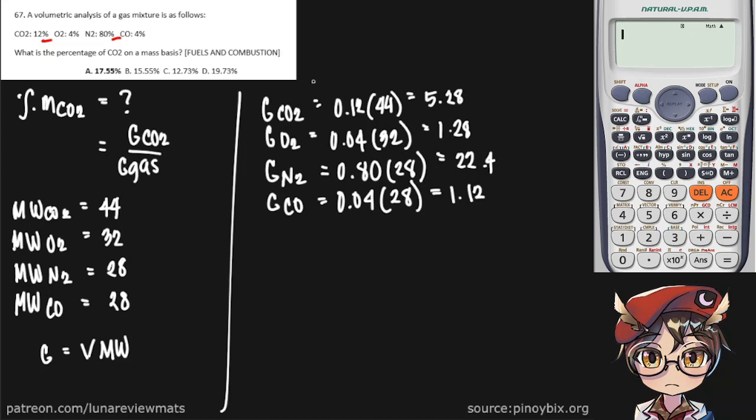If you've noticed, we already have the mass of our carbon dioxide here, so we do need to find our total mass of the gas by adding all of these. By adding all of these, this should be equal to about 30.08. And now we have the total percent mass of our gas.